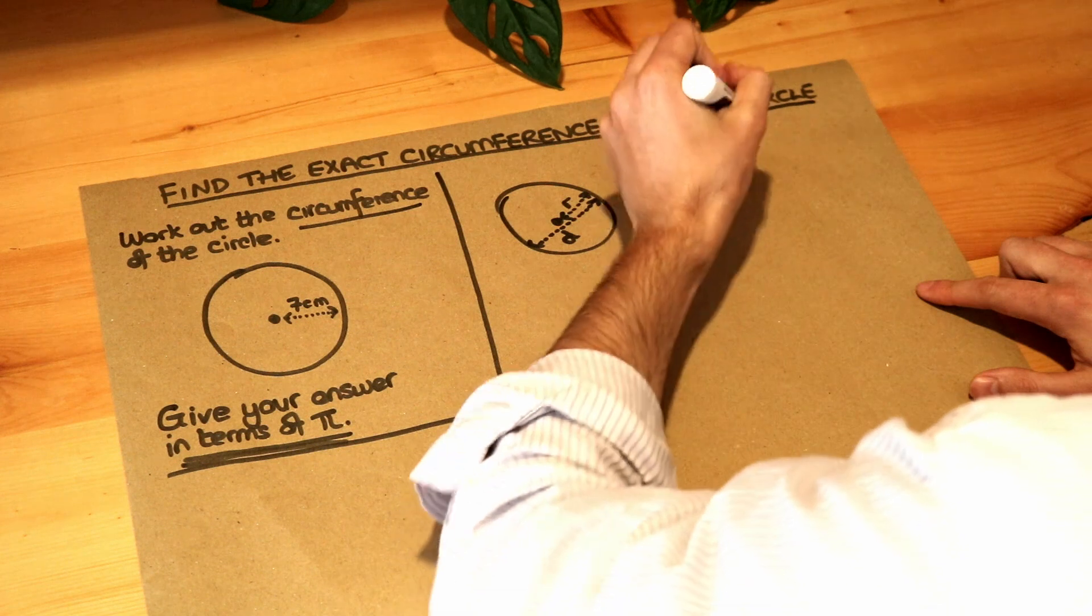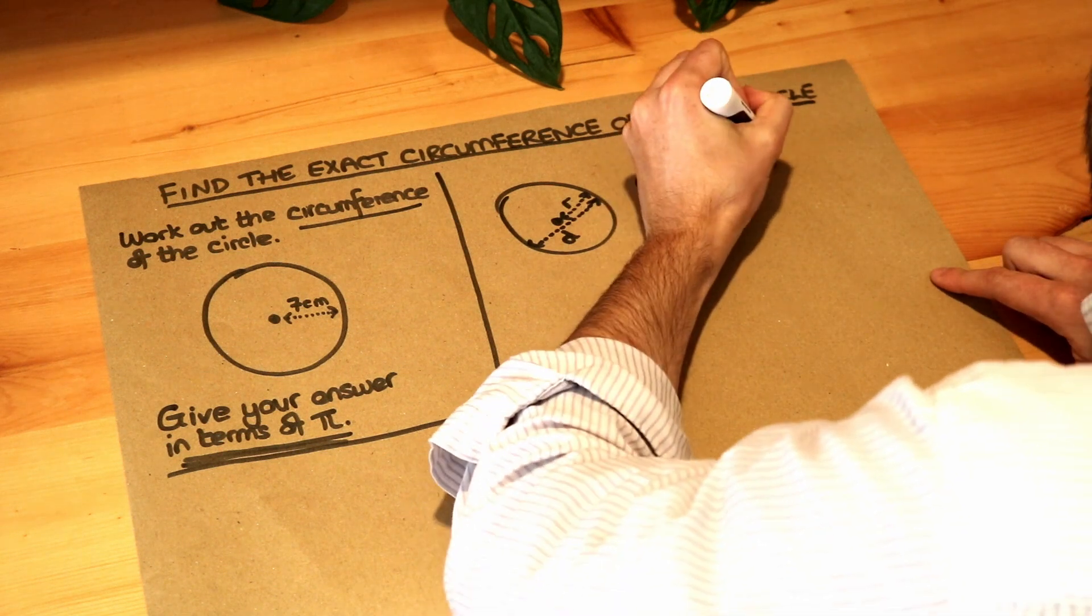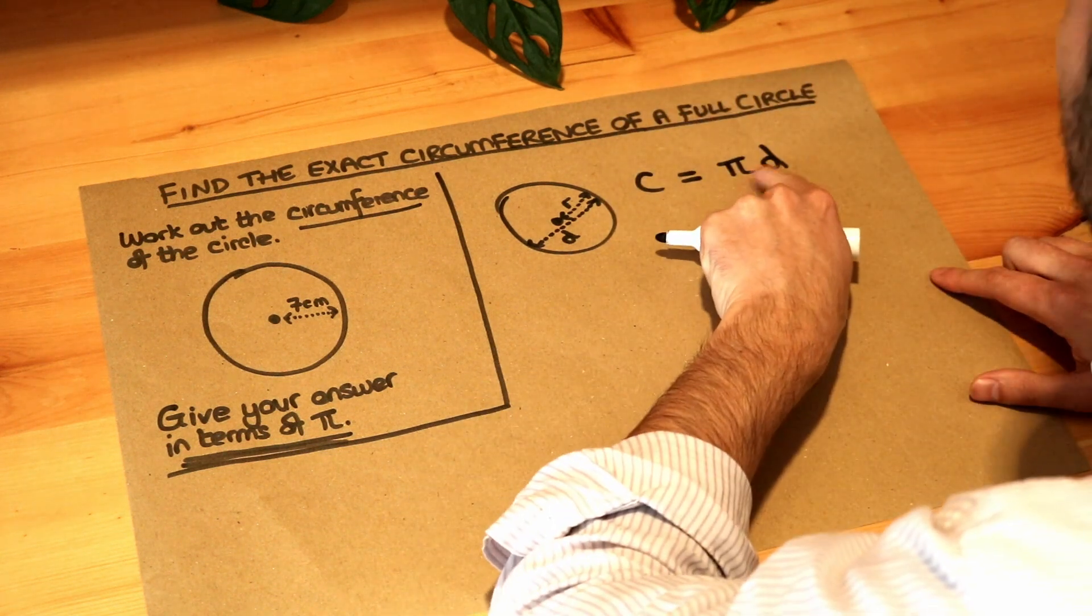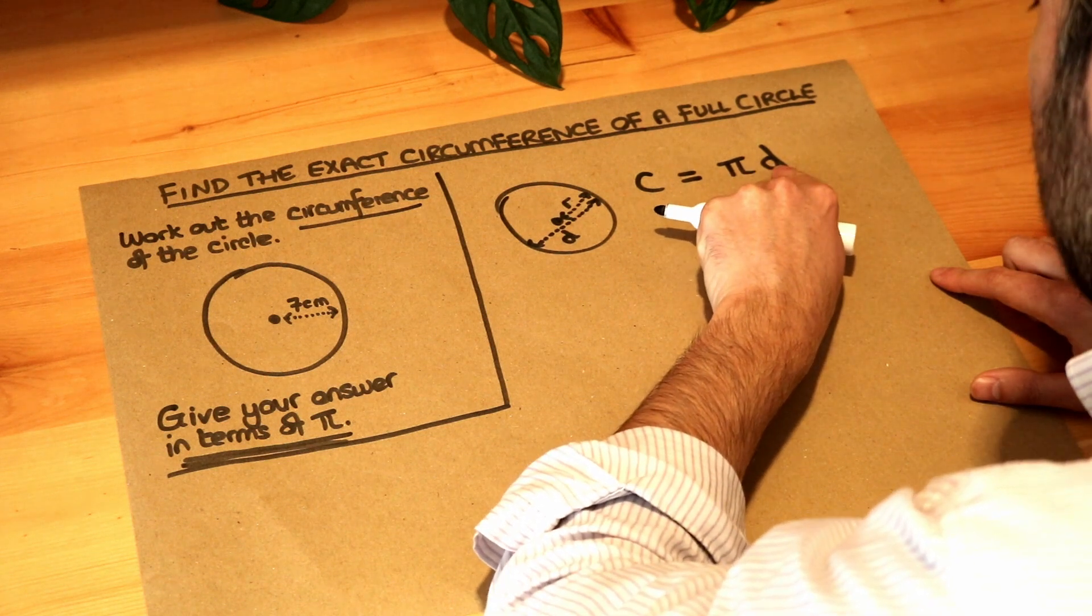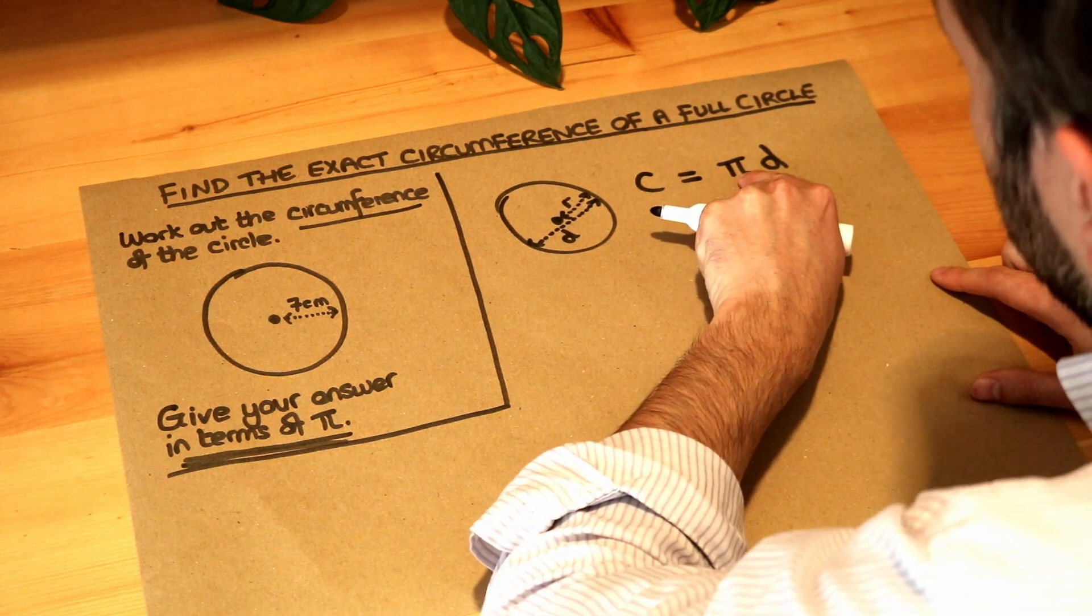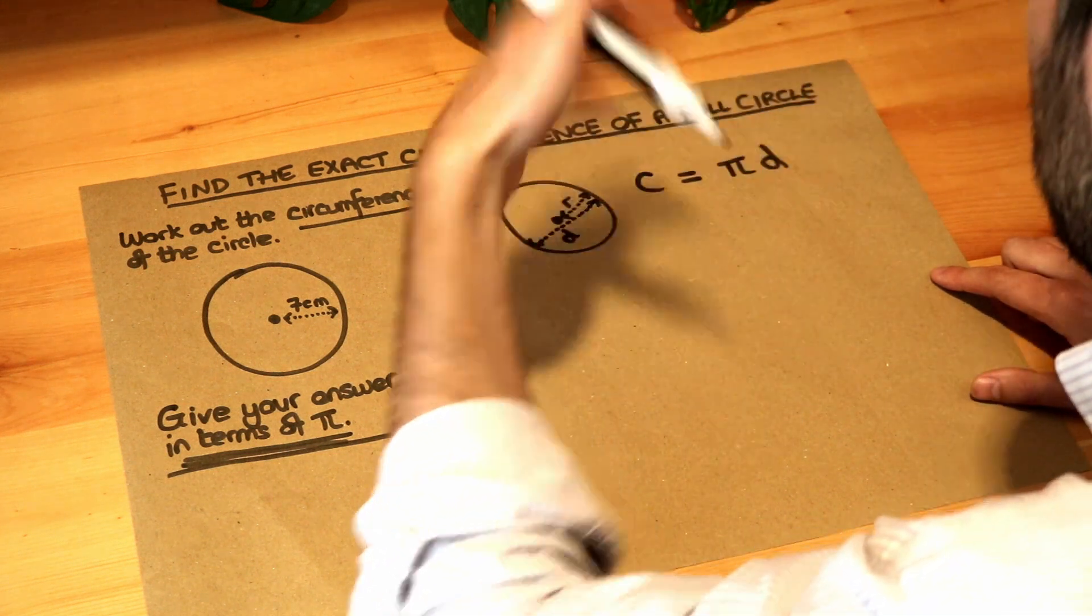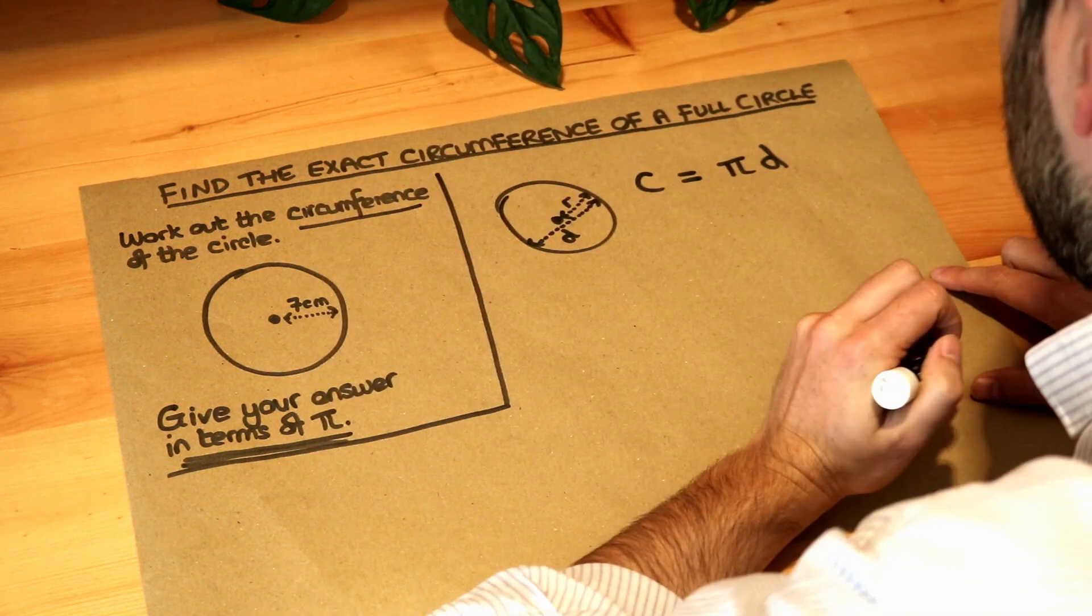I'm going to use C for short, is either pi times the diameter. Remember when you put things next to each other in algebra, it means times, it's pi times by the diameter. And remember pi is a special number in maths. It has the value 3.141, etc. But we can get it on our calculator.